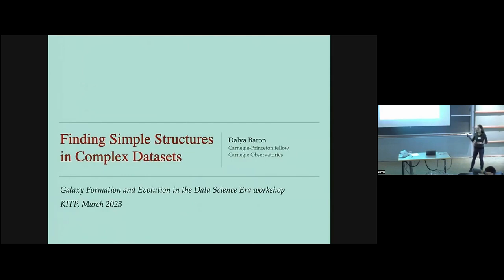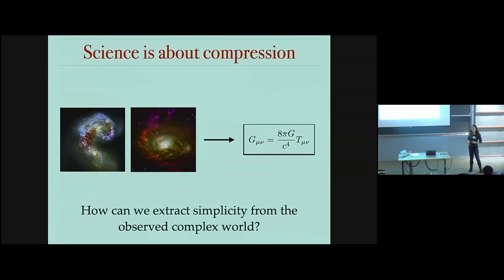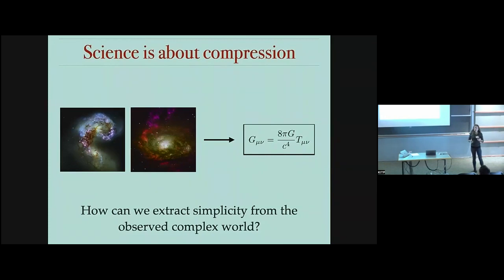Today I'm going to talk about how we find simple structures in complex data sets. Basically, as scientists, what we're trying to do is observe the complex universe around us and derive some simple laws or simple rules that describe this observed complexity. In some sense, science is compression — and the question is how do we extract this simplicity from the complexity we observe around us.